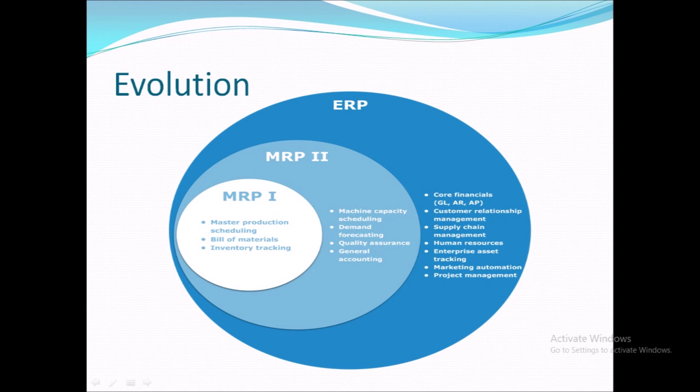The evolution went as follows: first, MRP1 covered master production scheduling, bill of material, and inventory tracking. Then MRP2 added capacity planning, demand forecasting, quality control, accounting, and general financial principles. Third, ERP introduced core financials — accounts receivable, accounts payable — customer relationship management, supply chain, human resources, enterprise asset tracking, marketing, and project management.